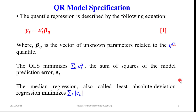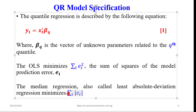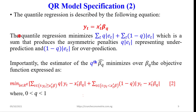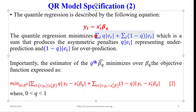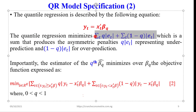QR modeling can be used on any type of data. The median regression, also called least absolute deviation regression, minimizes the sum of absolute residuals. The quantile regression minimizes a sum that produces asymmetric penalties, such that the first part of the equation represents under-prediction and the second part captures over-prediction. Importantly, the estimator of the Q-th quantile minimizes over the betas the objective function expressed in equation 2, which is also divided into two parts. Q must lie between 0 and 1.